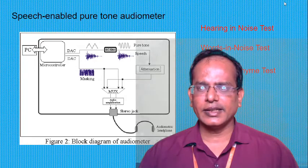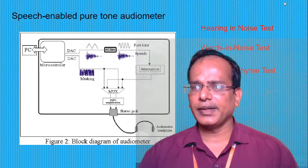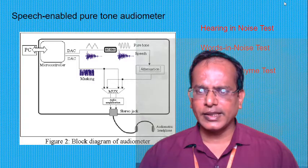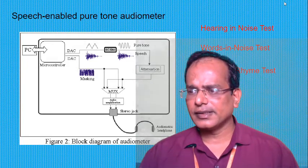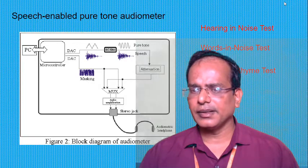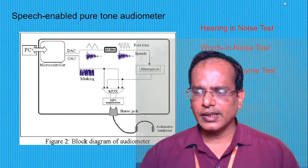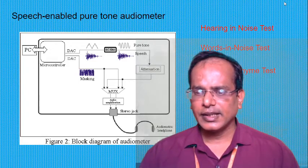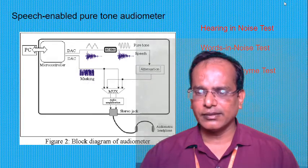The Speech Reception Threshold (SRT) is the softest intensity at which an individual can repeat spondaic words at least 50% of the time. Spondaic words are bisyllabic words with equal emphasis on both syllables. For patients with poor word recognition, a limited set of words may be used. The Speech Detection Threshold (SDT), also called the Speech Awareness Threshold (SAT), is the lowest intensity speech stimulus that an individual can detect at least 50% of the time.